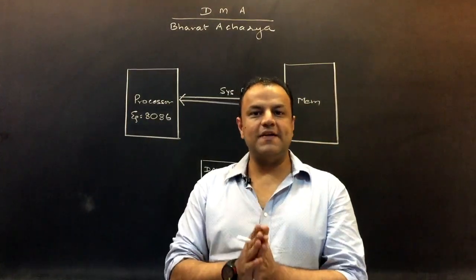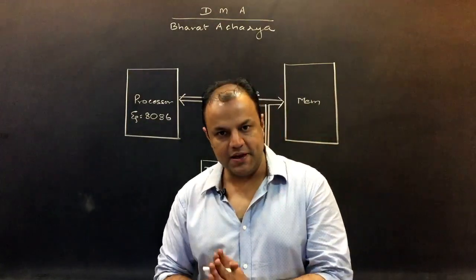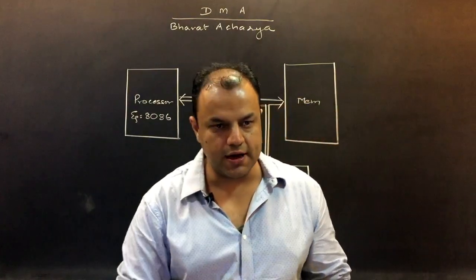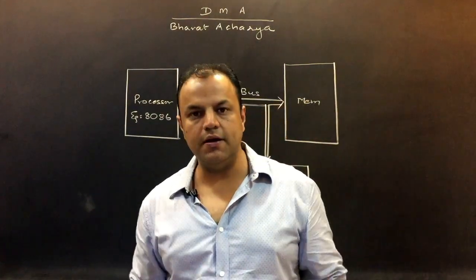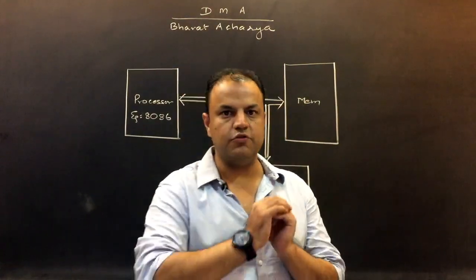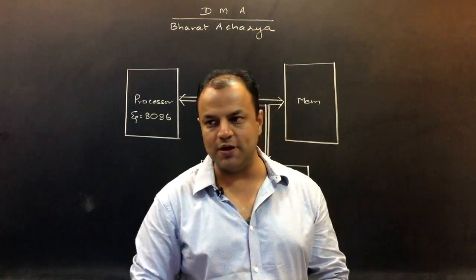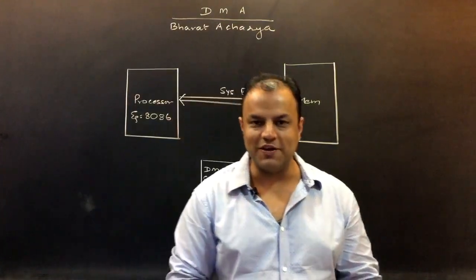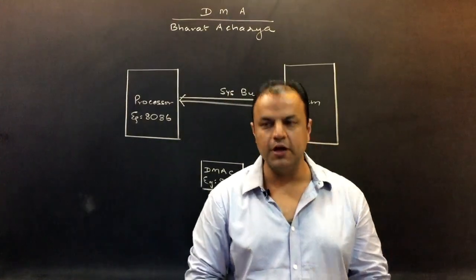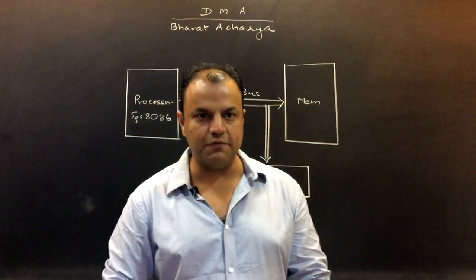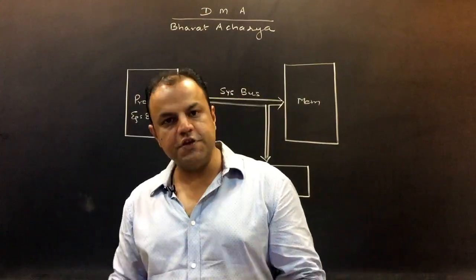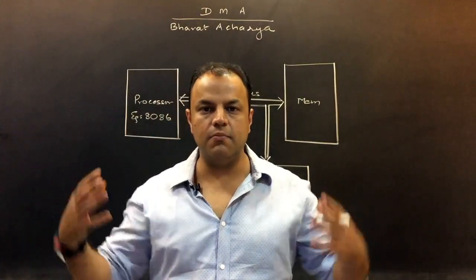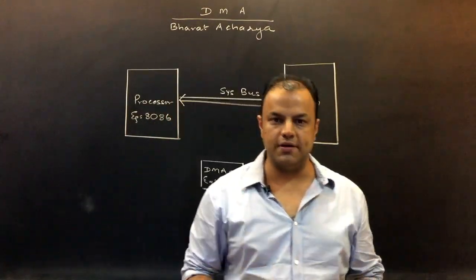DMA stands for Direct Memory Access — transferring data directly between memory and IO. The advantage of DMA is it is super fast. People think DMA is two times fast — rubbish, it is super fast. It is extremely fast. The efficiency of DMA increases as you increase the amount of data to be transferred.